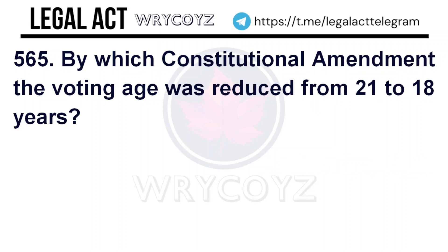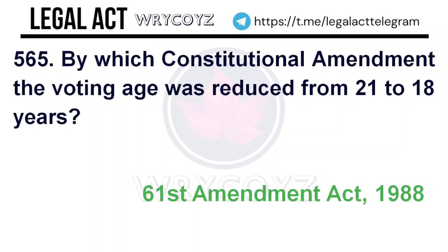565. By which constitutional amendment was the voting age reduced from 21 to 18 years? Answer is the 61st Amendment Act, 1988.